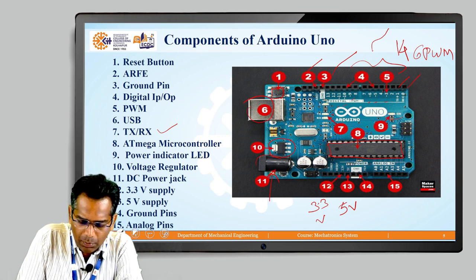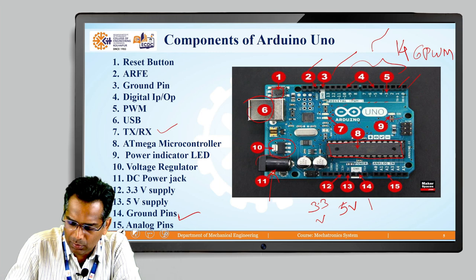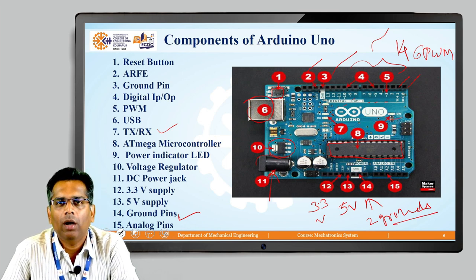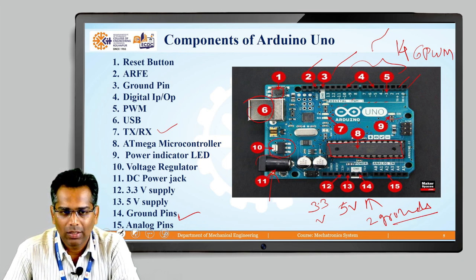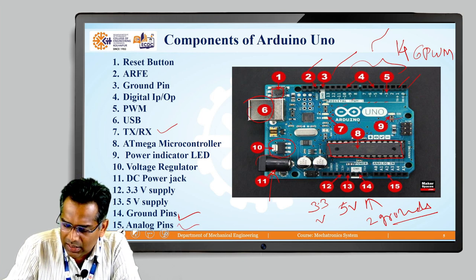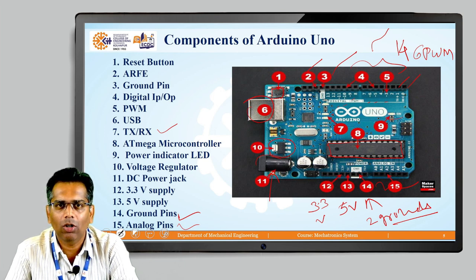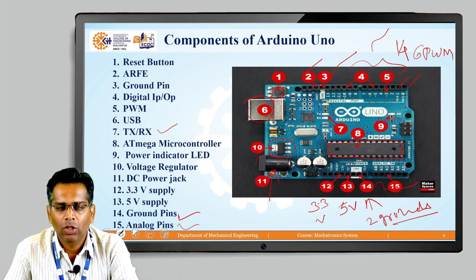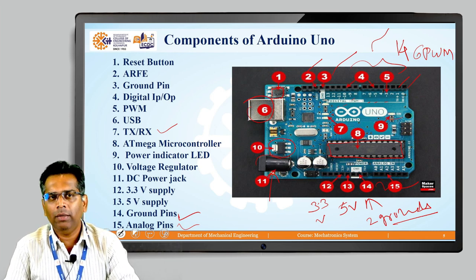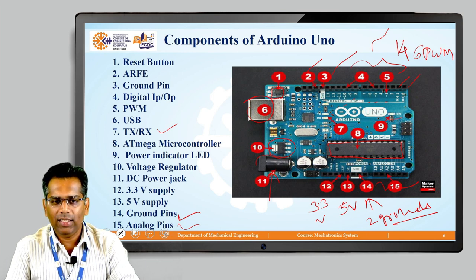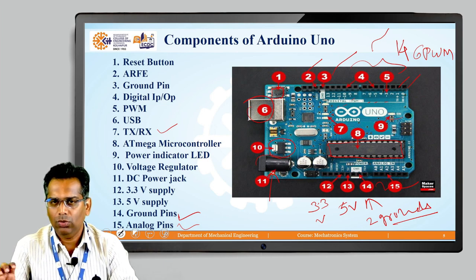Pin number 14 has two ground pins available, so in total this Arduino has three ground pins. Pin number 15 covers all six analog pins — this Arduino has six analog input pins for connecting analog inputs. This covers the introductory part of the Arduino Uno. In the next lecture, we are going to discuss about the IDE, that is the integrated development environment of this Arduino Uno. Thank you.